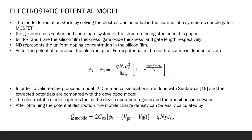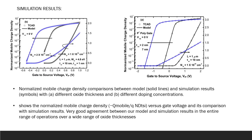We move to the validation process where these graphs give the simulation results for the electrostatic potential modeling. The gate to source voltage is very high and normalized mobile charge density comparisons between model and simulation results are shown. There are two parameters: different oxide thickness and different doping concentrations. At last we are able to derive a very good agreement between our model and simulation results in the entire range of operation over a wide range of oxide thickness.